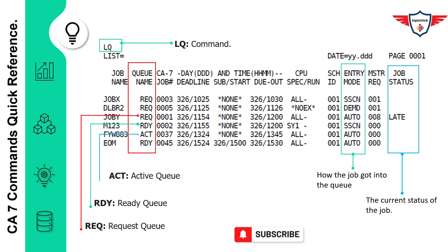RDY is used for ready queue and ACT is used for active queue. For example, job Y is right now in the ready queue — it's waiting. Job M123 is also in the ready queue, so it is about to be submitted. Job FYW883 is in the active queue, which means it is currently executing.